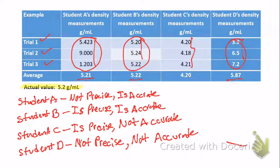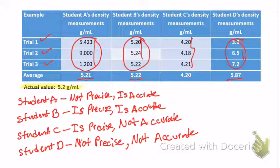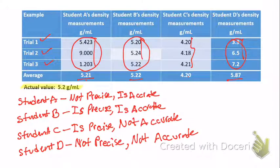So that covers comparing accuracy and precision for these four students. I hope this was helpful. Make sure you know the difference between accuracy and precision, and be able to look at a set of experimental data and determine if it is precise and accurate when given a true or accepted value.